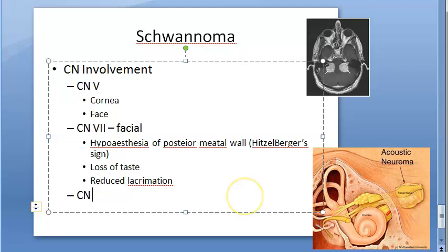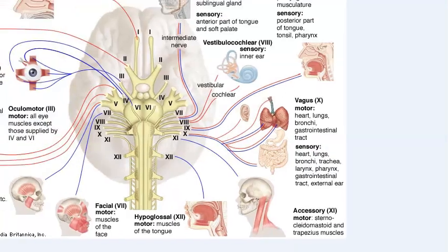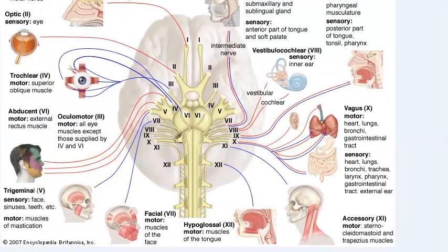The next cranial nerves involved are the ninth (glossopharyngeal) and tenth (vagus). This causes palatal, pharyngeal, and laryngeal paralysis — resulting in dysphagia (difficulty swallowing) and hoarseness of voice.